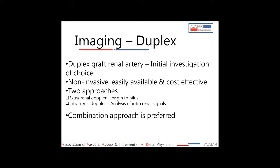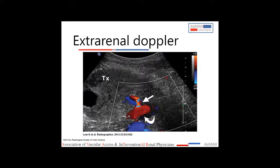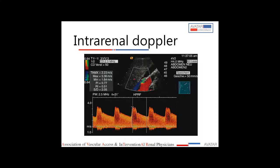To diagnose TRAS in a renal transplant kidney, you have two approaches. First, extra-renal Doppler, where you trace the entire graft renal artery from its origin at the iliac artery to the hilum, measuring peak systolic velocity. The advantage is precise localization of stenosis, but it is highly operator-dependent and difficult if the vessel is tortuous. The other approach is intra-renal Doppler, where you analyze intra-renal waveforms to predict the presence of stenosis in the graft renal artery. Studies show a combination approach is always preferred.